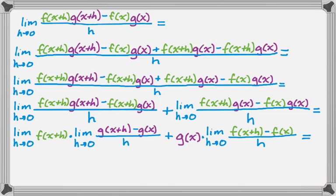The first limit that I see, limit as h approaches 0 of f of x plus h, if h goes to 0, that just becomes f of x. The second limit becomes g prime of x. g of x is just g of x. And then this last limit is actually just f prime of x.